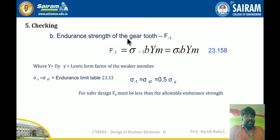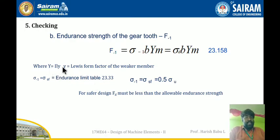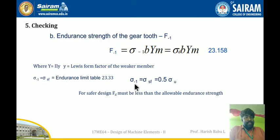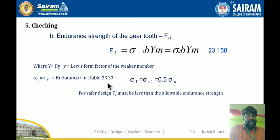For the endurance strength check, the endurance strength of the gear F₋₁ = σ₋₁ × b × Y, where Y = π × y (the Lewis factor multiplied by π). The endurance limit σ_SF can be taken from table 23.33, and is approximately equal to 0.5 × ultimate stress. For a safer design, FD must be less than the allowable endurance strength. If asked to calculate endurance strength, ensure the endurance stress is less than the dynamic load.